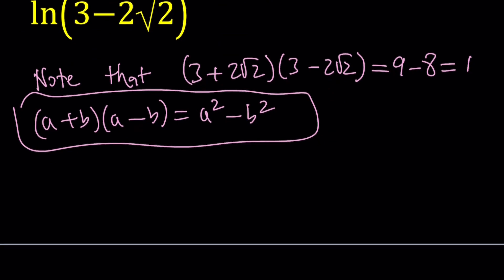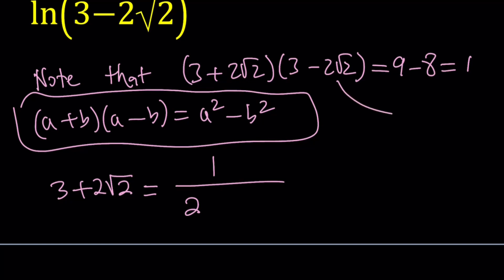This tells us a very important property — that one of these, say 3 plus 2 root 2, can be written as the reciprocal of the other. So we can write 3 plus 2 root 2 as 1 over 3 minus 2 root 2. When you cross multiply, you get 1, so it checks out.